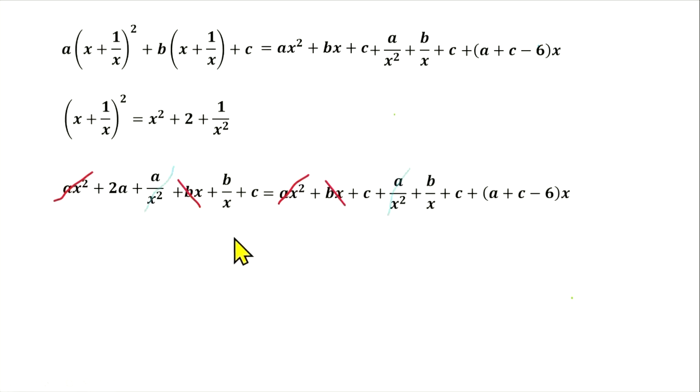Then we can cancel b times x, then a over x squared, then b over x, and last what we can cancel is c.